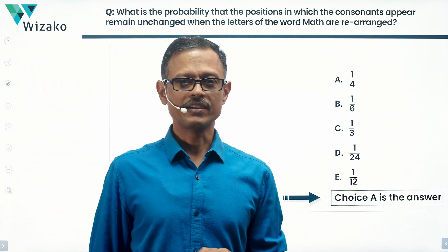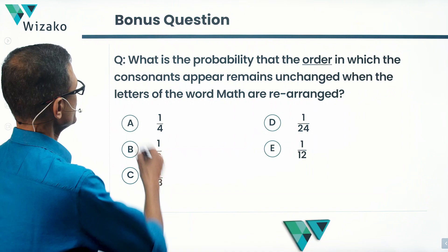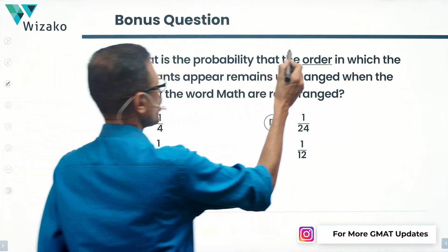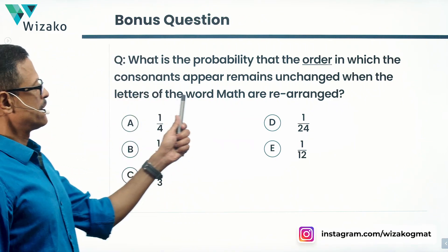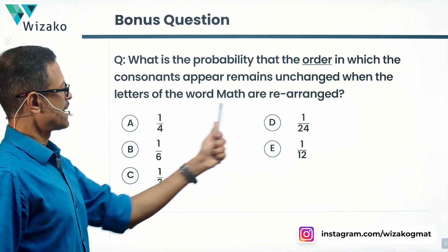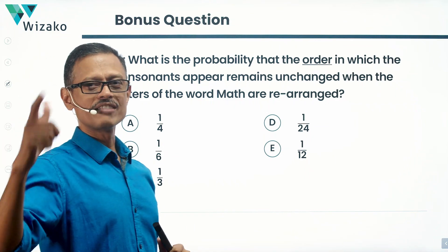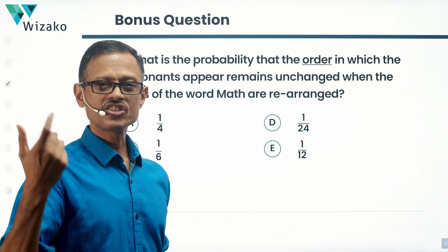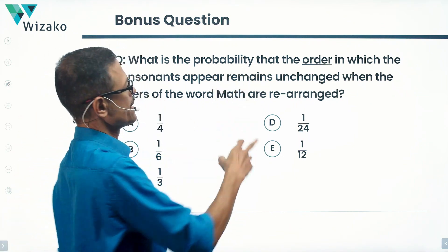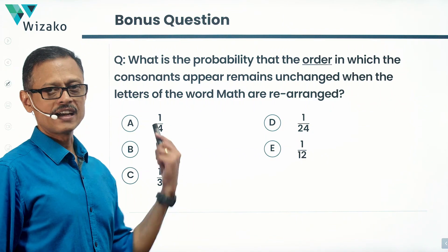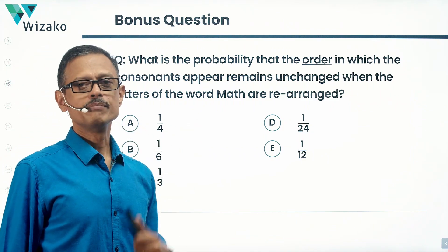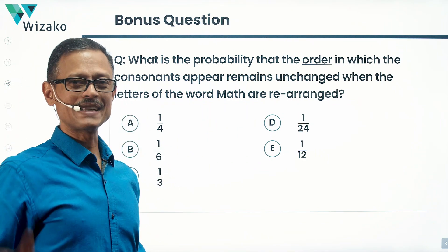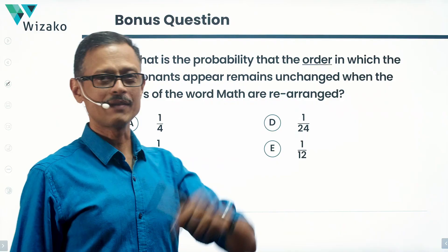I have a bonus question for you. What is the probability that the order in which the consonants appear remains unchanged when the letters of the word MATH are rearranged? I've just changed one word — the original question asked about 'position,' and here I've changed it to 'order.' The answer options are the same. One of the answer options will meet the criteria — give it a shot and post your answers in the comments box.